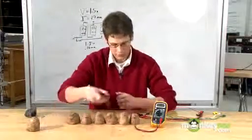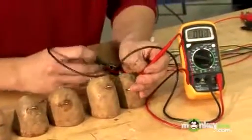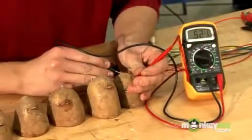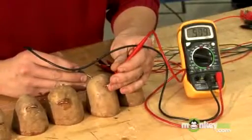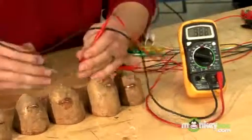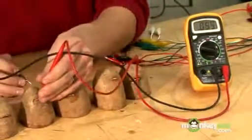If we take our multimeter, we can measure the voltages coming out of each battery, and if we put the red on the anode and the black on the cathode, we'll see that we're getting about 0.63, about 0.58 volts, about 0.65 volts,